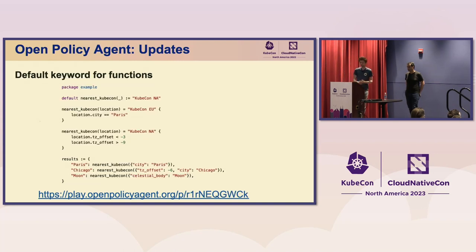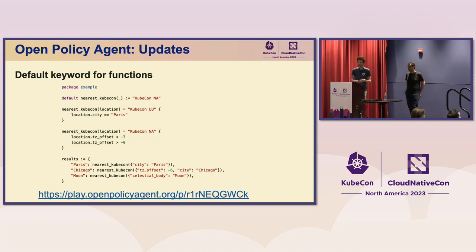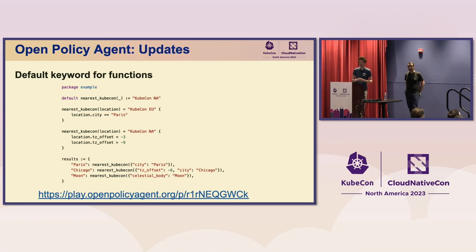We've also added the default keyword for functions. The idea is that we can define default outputs for functions — for example, by default someone's nearest KubeCon is KubeCon North America. But if the user's city is in Paris, they get shown KubeCon EU as their nearest. If their time zone offset is within a particular range, they get North America. And if they are on a different planet or celestial body, by default we show them KubeCon North America.